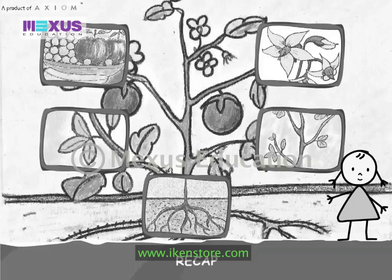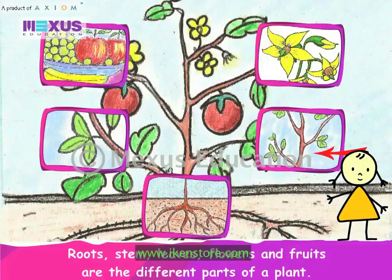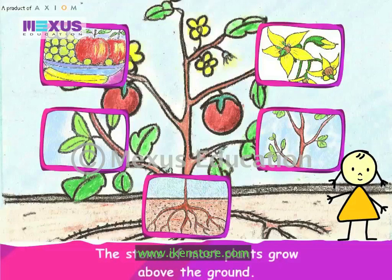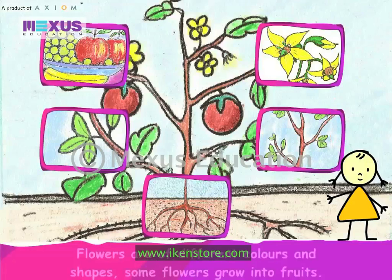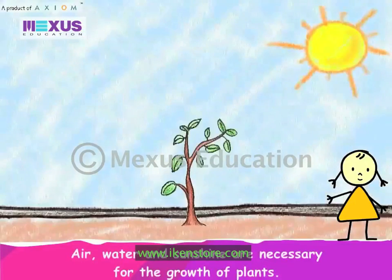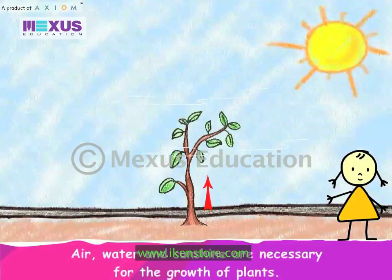Recap. Roots, stem, leaves, flowers and fruits are the different parts of a plant. Roots of most plants grow below the ground. The stems of most plants grow above the ground. Flowers are of different colors and shapes. Some flowers grow into fruits. Fruits contain seeds and most plants grow from seeds. Air, water and sunshine are necessary for the growth of plants.